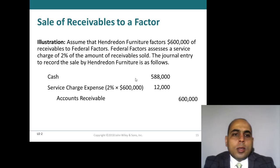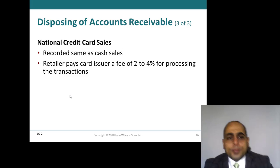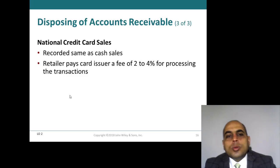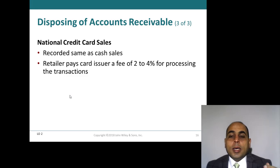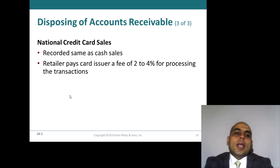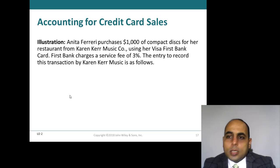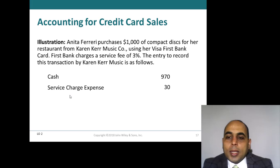This concept is similar to how national credit cards work. If you go to a supermarket and pay by credit card, the credit card company deducts a percentage commission from the retailer. For example, Anita Ferrari purchases $1,000 of goods from Caring Music Company using her Visa First Bank card. First Bank charges a service fee of 3%. The entry to record this transaction by Caring Music Company: